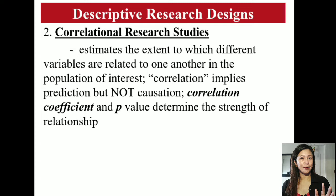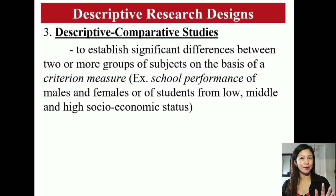The strength of relationships between variables is determined by correlation coefficient or p-value. The descriptive comparative design aims to establish significant difference between two or more groups of subjects or individuals on the basis of a criterion measure — for example, school performance or IQ level of female and male students or students from different socio-economic status.